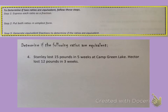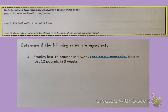Let's look at this first problem. Stanley lost 15 pounds in five weeks at Camp Greenlake. Hector lost 12 pounds in three weeks. We don't really need to know that it's at Camp Greenlake, so we can cross that out. But we do need to know that Stanley lost 15 pounds in five weeks, and for Hector it was 12 pounds in three weeks. Those numbers are what are going to go in our ratios.